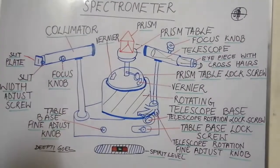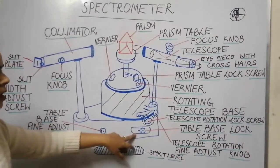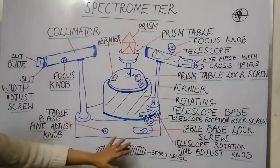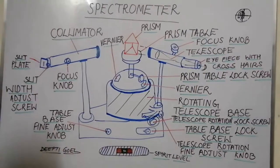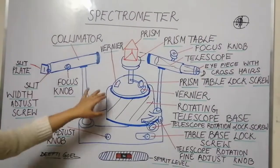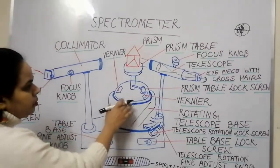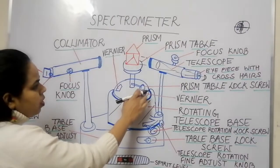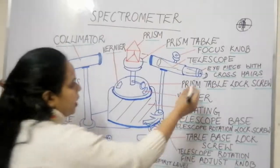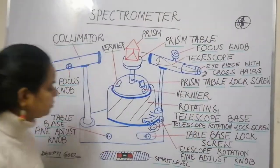The table base lock screw locks the entire assembly, and the prism table lock screw secures the prism table. The eyepiece contains cross hairs used for precise reading alignment.